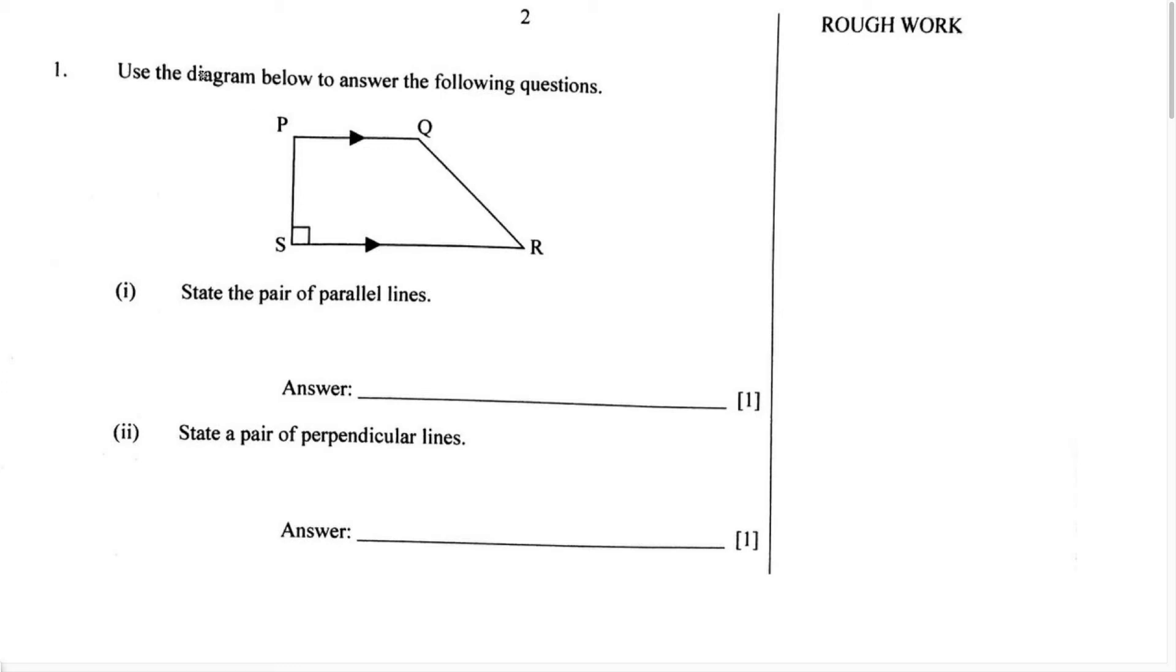Number 1 says, use the diagram below to answer the following questions. We know this polygon is going to form a trapezoid, and it's going to be known as a right angle trapezoid.